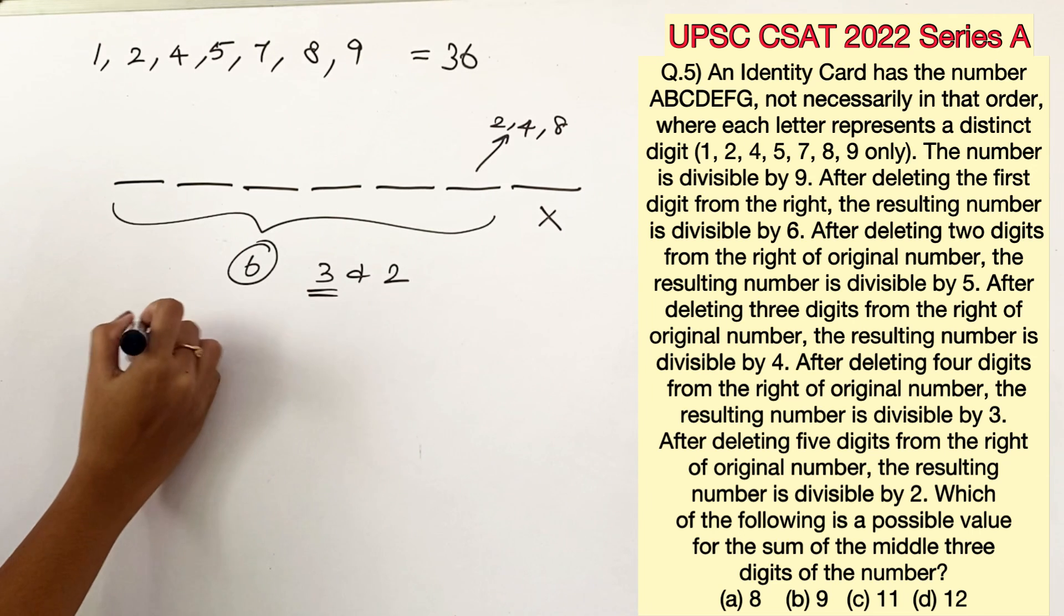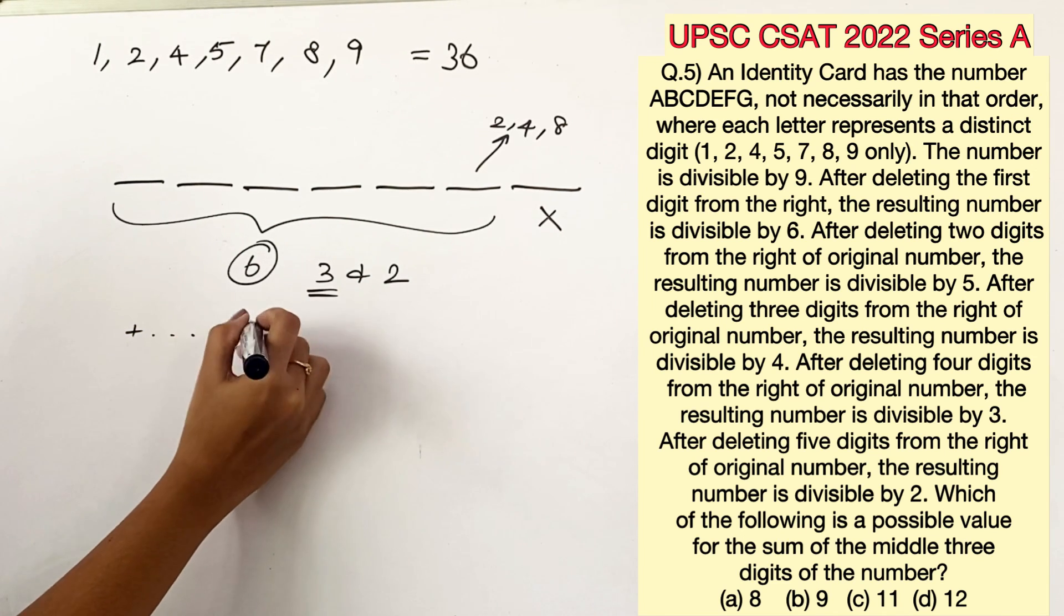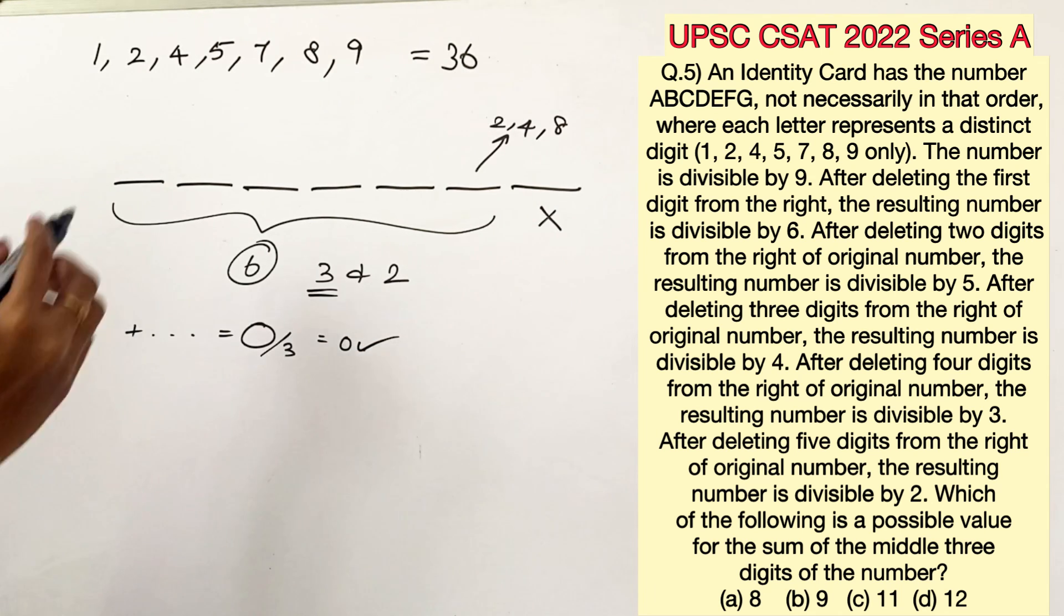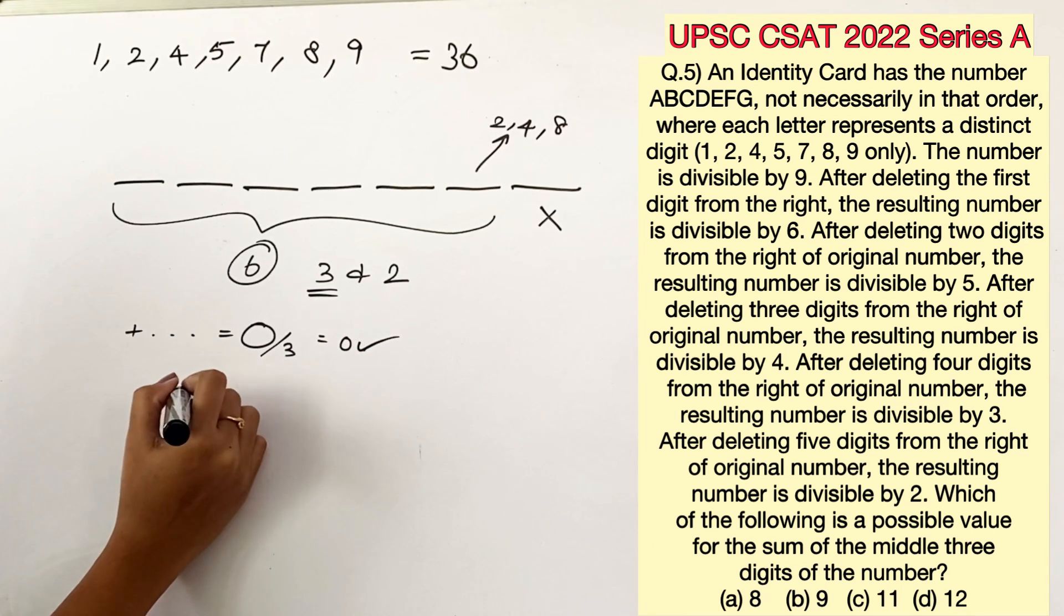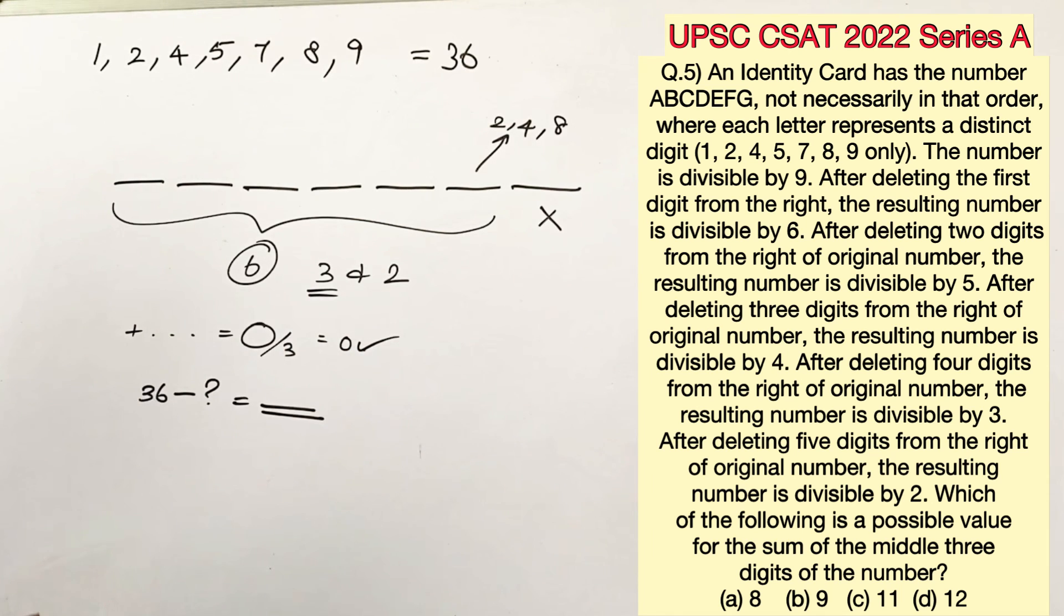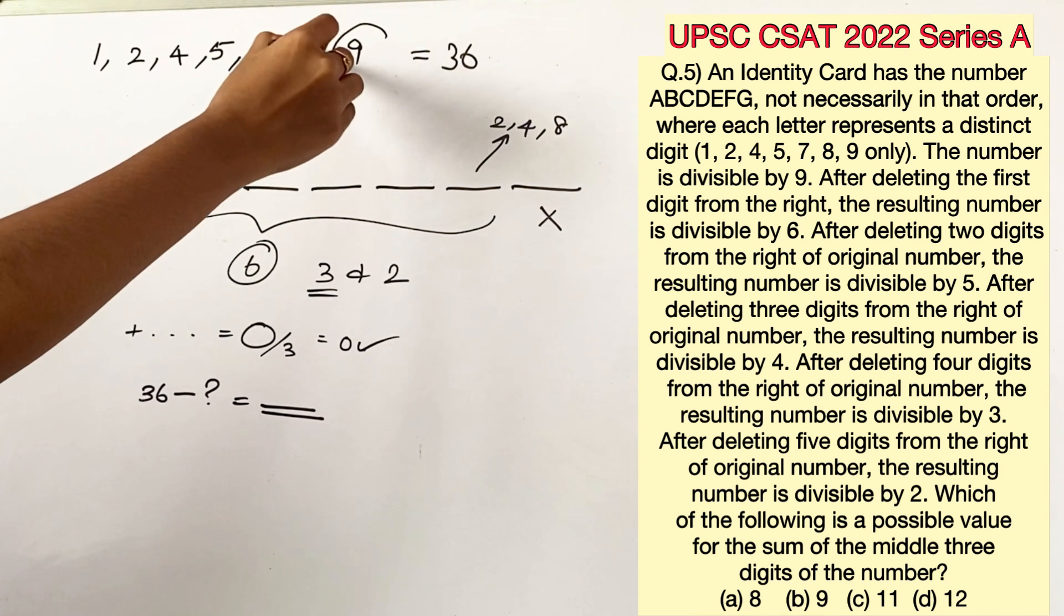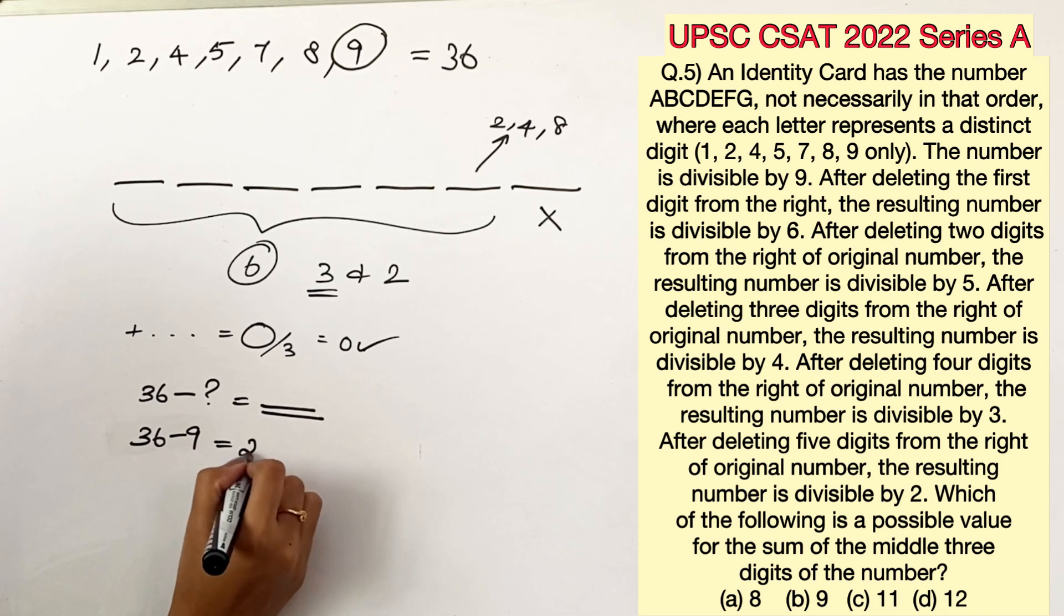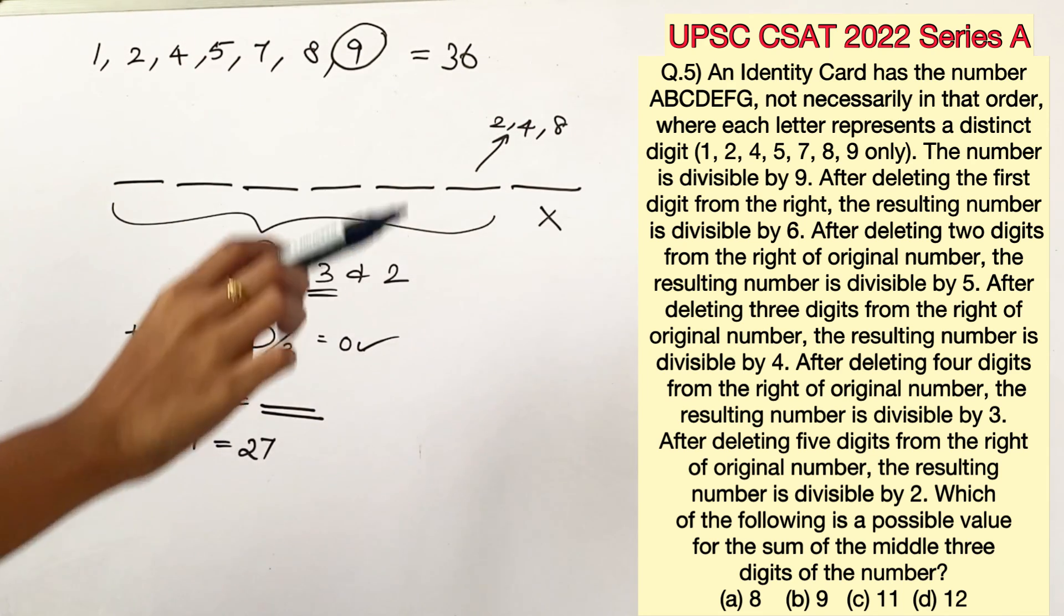Now for the number to be divisible by 3 the addition of the numbers should be divisible by 3. Or in other words the remainder should be 0 when divided by 3. Since we know that the total sum is 36 we have to find that one number which when subtracted from 36 is still going to give us a number that is divisible by 3. And the only option that satisfies this criteria is 9. When you subtract 9 from 36 it is going to give you 27. If you subtract any other number given it is not going to give a number which is divisible by 3.